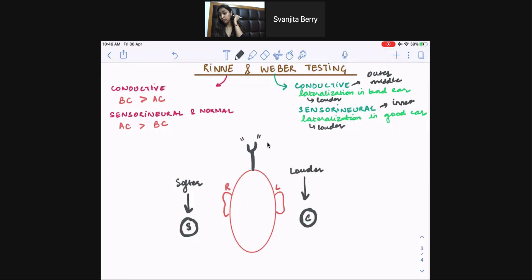Once they stop hearing the tuning fork, we remove it from the mastoid process, and we hold it up in the ear, up in the air, close to their ear. And that represents air conduction. If they continue to hear it in air, that means air conduction is longer than bone conduction, if they continue to hear it in air.